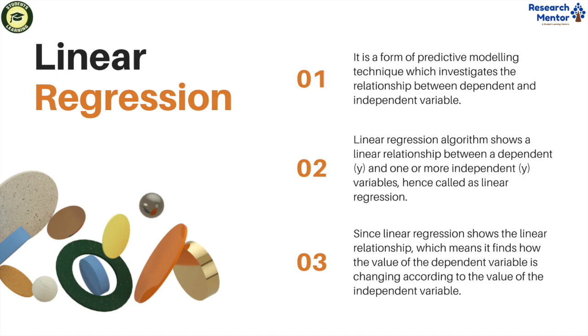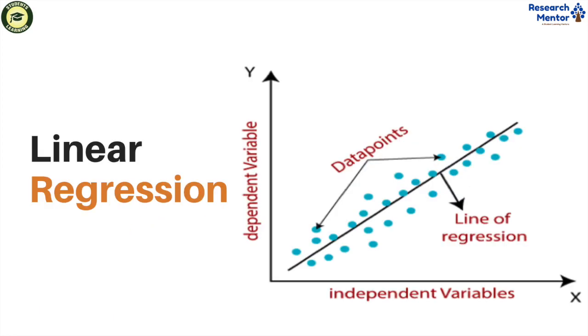Linear regression investigates the relationship between independent and dependent variables. A regression analysis involves graphing a line over a set of data points that most fits the overall shape of the data. Regression shows the changes in independent variables.